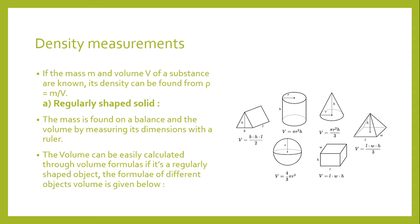There are different ways to measure density depending on what we are measuring. For a simple regularly shaped solid, the mass is found using a balance and the volume is found by measuring its dimensions with a ruler. To measure the volume of a regularly shaped object, we have specific formulas.